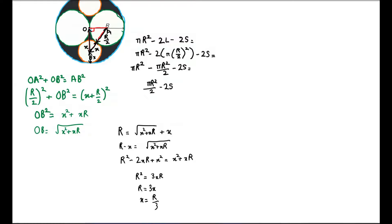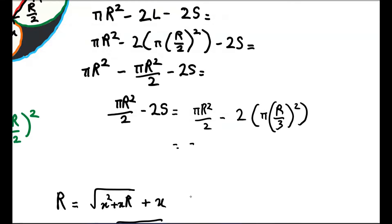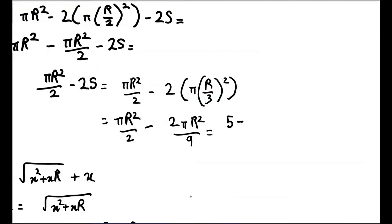Now that we have the radius of the orange circle as r/3, we can find the final area. Substituting into our expression: πr²/2 − 2π(r/3)² = πr²/2 − 2πr²/9 = 5πr²/18. This is our final answer.